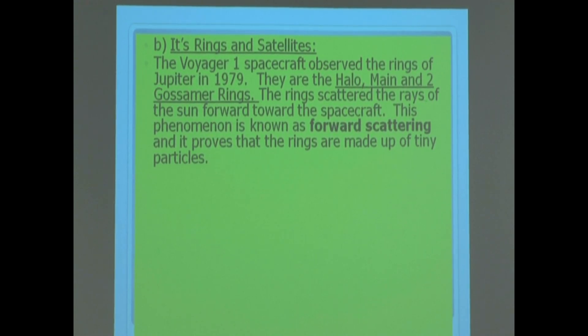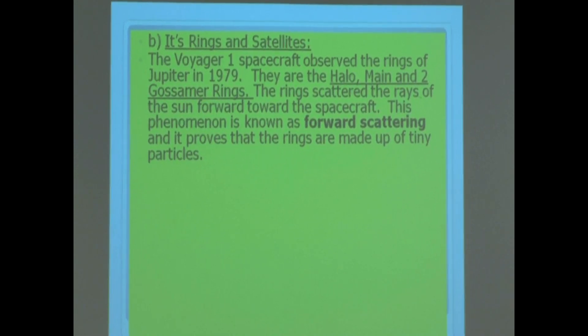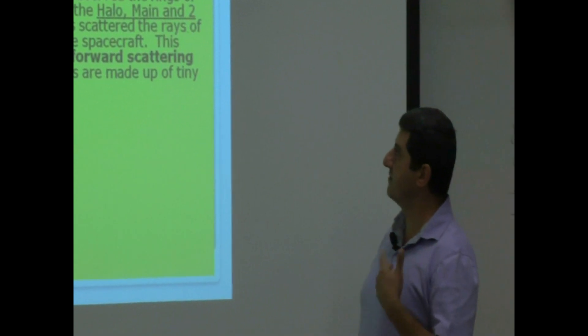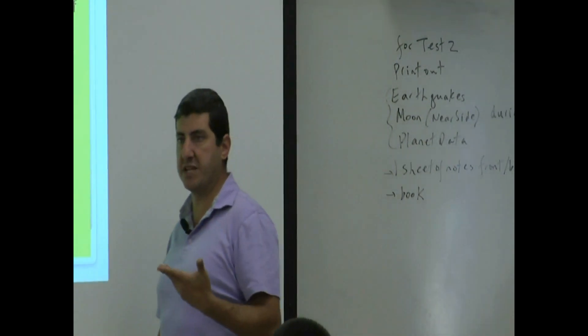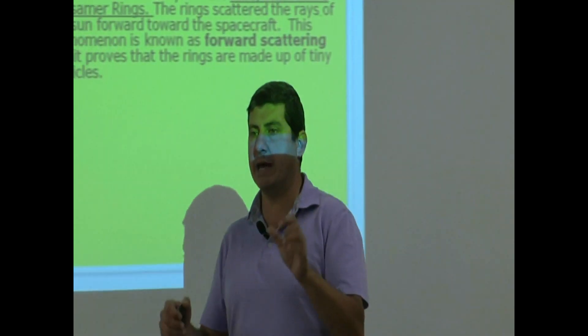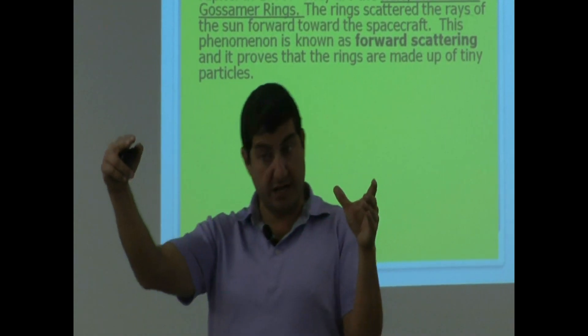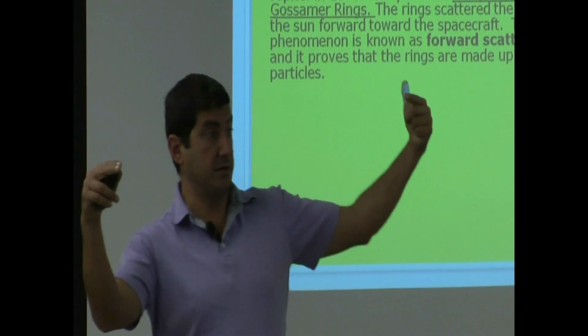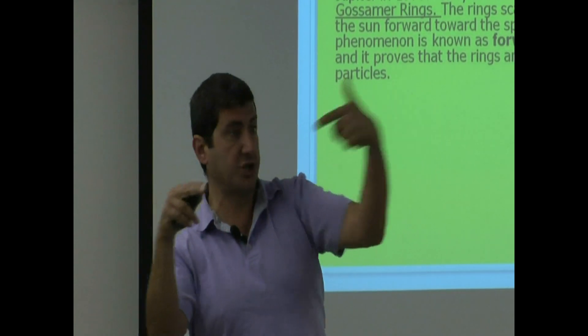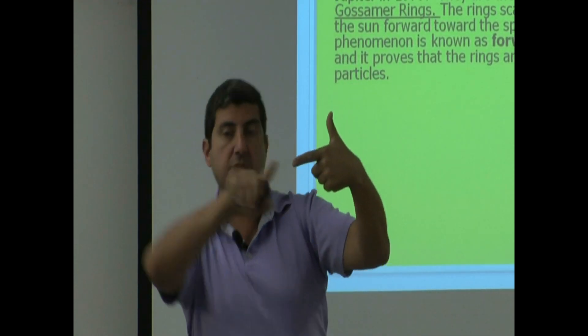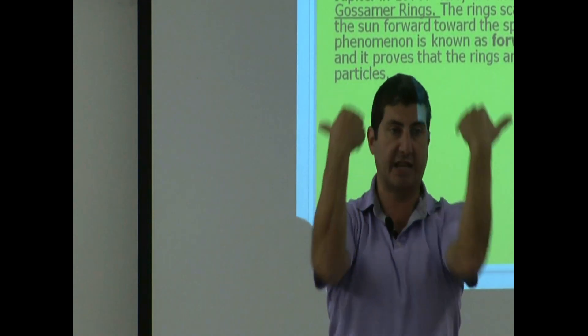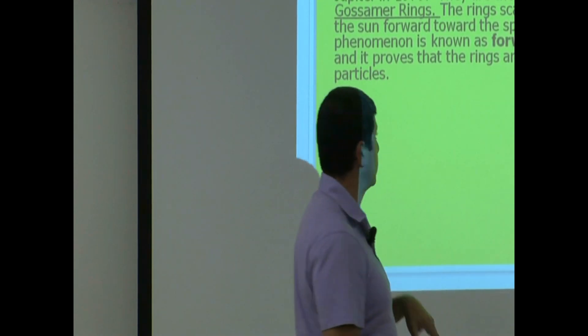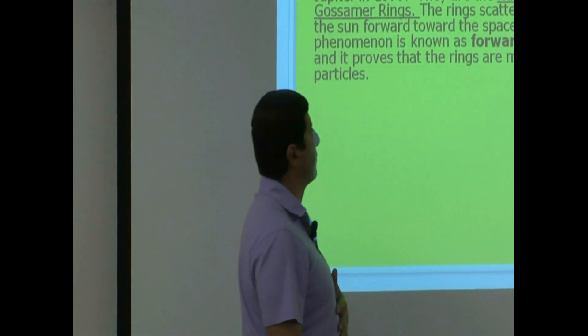Halo, main, and two gossamer. The rings scattered the rays of the sun forward towards the spacecraft. Okay? So what happened was the spacecraft went on the other side of Jupiter, and when the sunshine came, the sunlight, it bounced off those rings and scattered it forward to the spacecraft. This is a phenomenon known as forward scattering.